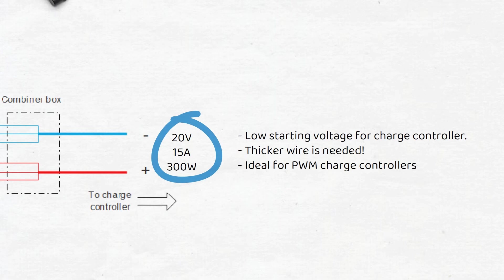If you use a PWM charge controller, wiring in parallel is more common because of the limit on input voltage. Always check your wire thickness if you use parallel. Standard wires might not be enough for the amount of current you send through it.